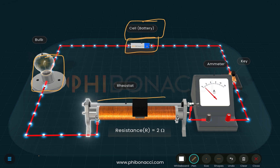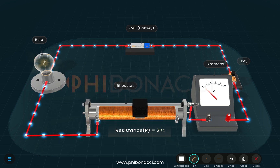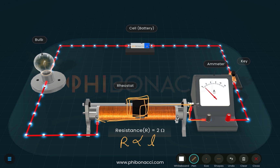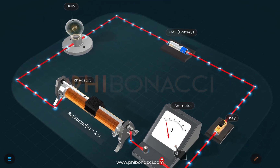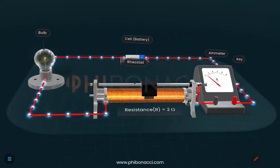Then we have a rheostat, which is a variable resistance. There is a sliding contact that can be moved. The current flows through the upper part and passes through the turns of the rheostat. When we change the position of the slider, we change the number of turns through which current passes. Since resistance is directly proportional to length, moving the slider increases or decreases resistance. We also have an ammeter to measure current and a key to switch the circuit on or off.